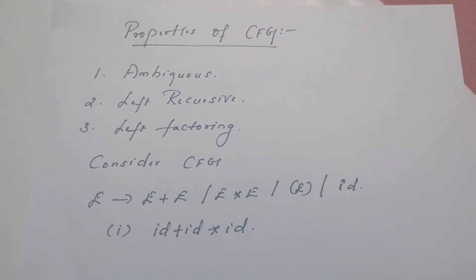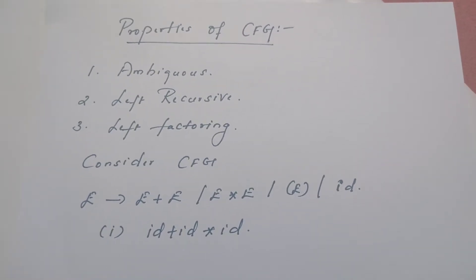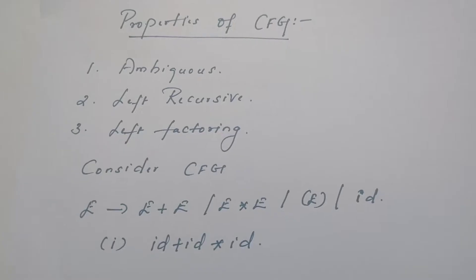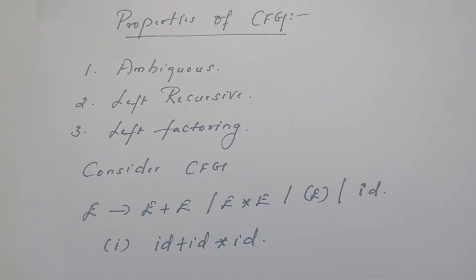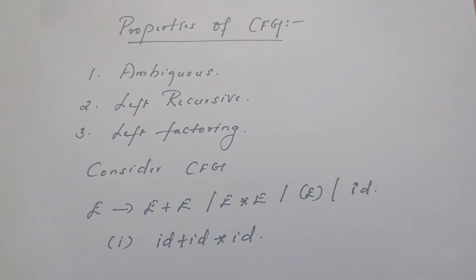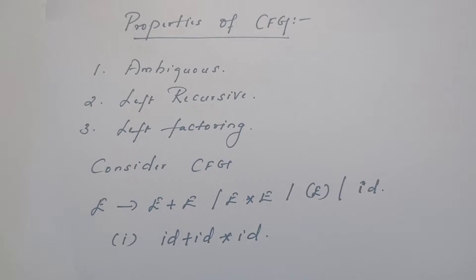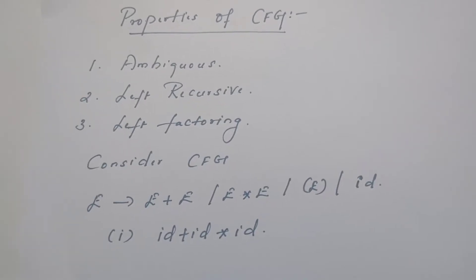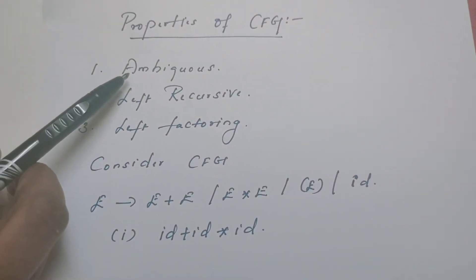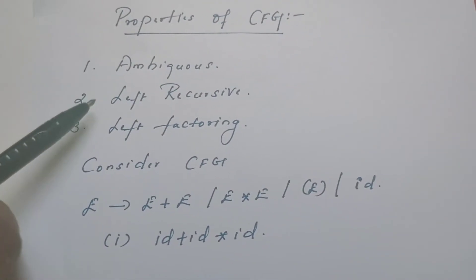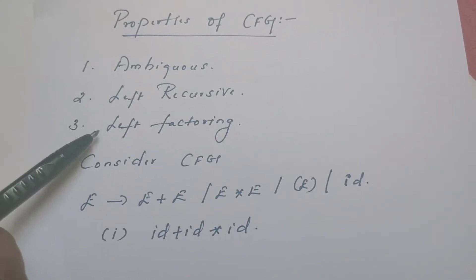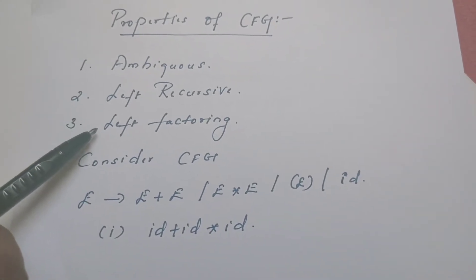Hello everyone, welcome to my channel, Master Computer Science Subject. Today in this video, we are going to discuss about the properties of CFG. There are three properties with respect to context-free grammar: the grammar may be ambiguous, the grammar can be left recursive, and the grammar can be left factored.